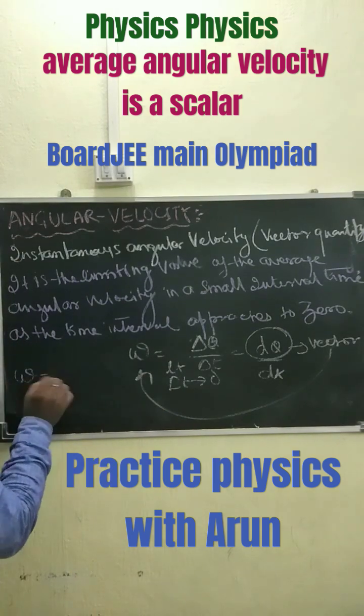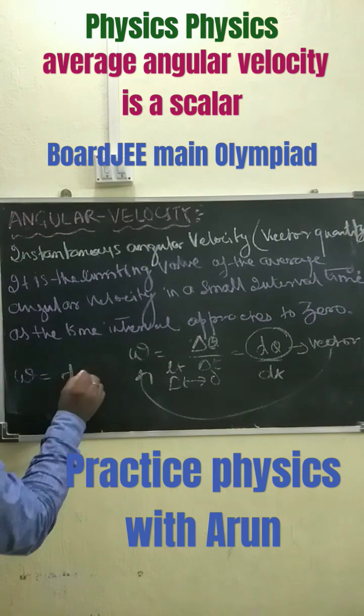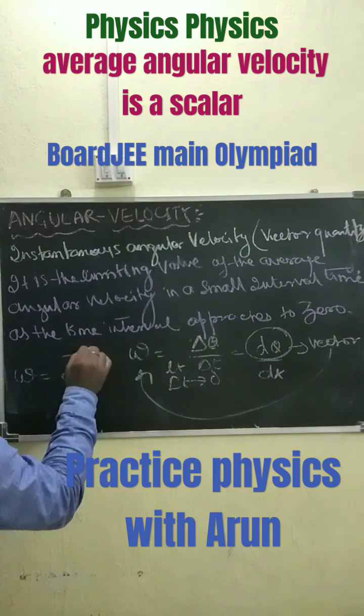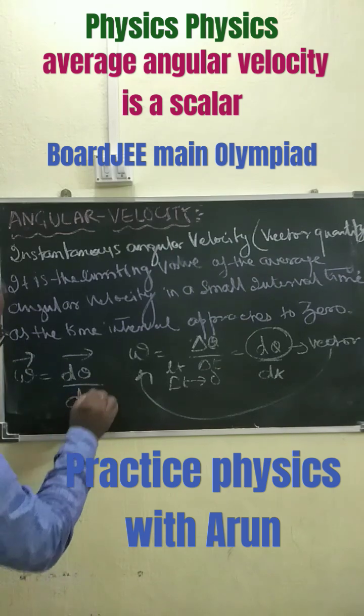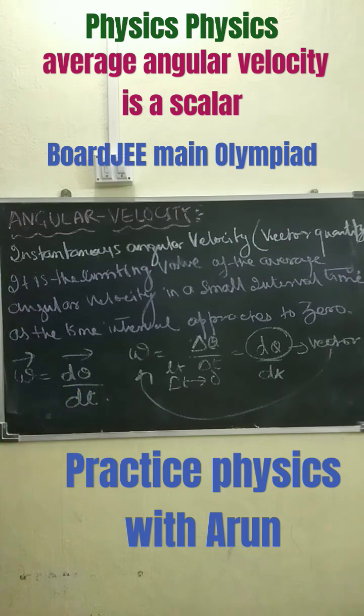So we can write omega equals d-theta by dt.